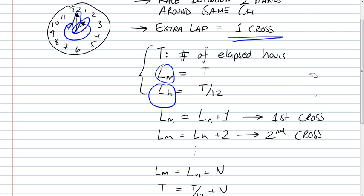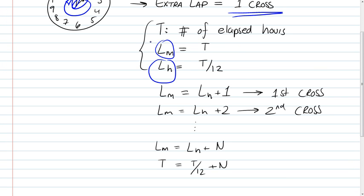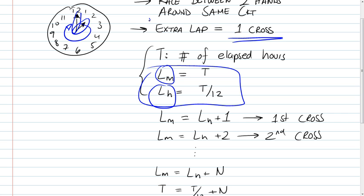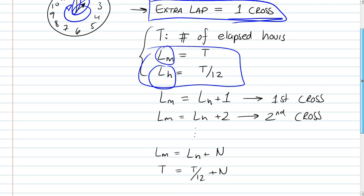And in terms of the hours hand, this happens every 12 hours. Every 12 hours you would have one lap. So these are the two basic equations. And then if we apply this rule: every extra lap equals one cross.